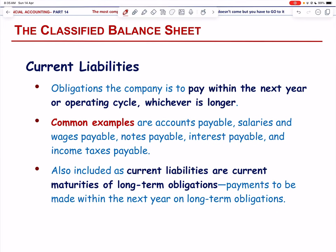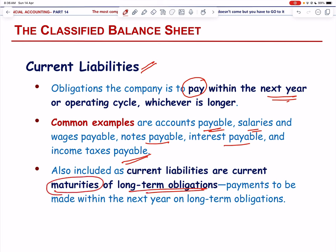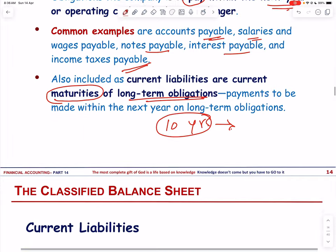A classified balance sheet splits liabilities into two groups. Current liabilities are obligations the company has to pay within one year or the operating cycle, whichever is longer. Examples include accounts payable, salaries and wages payable, notes payable, interest payable, and income tax payable. Current liabilities also include current maturities of long-term liabilities — if a long-term liability covering 10 years is due for completion in the current year, it is classified as a current liability.